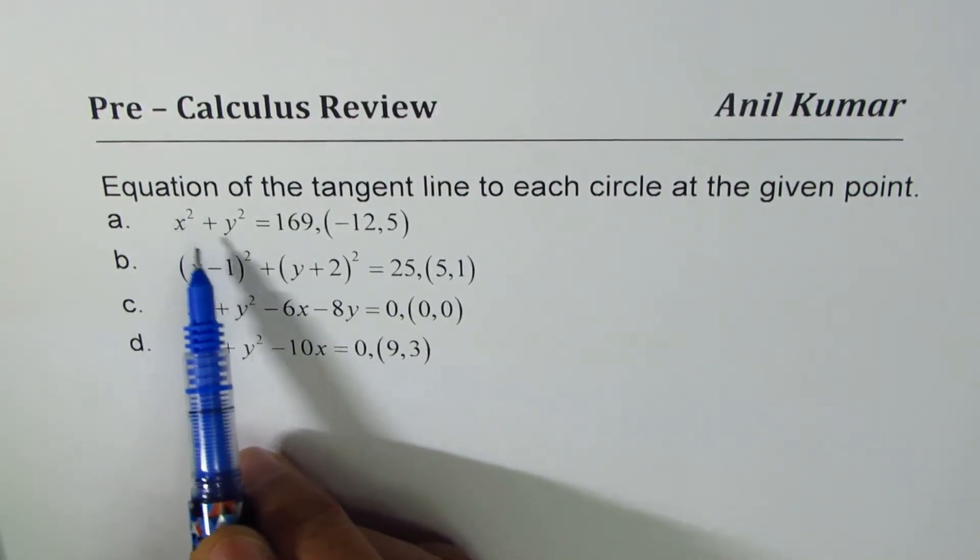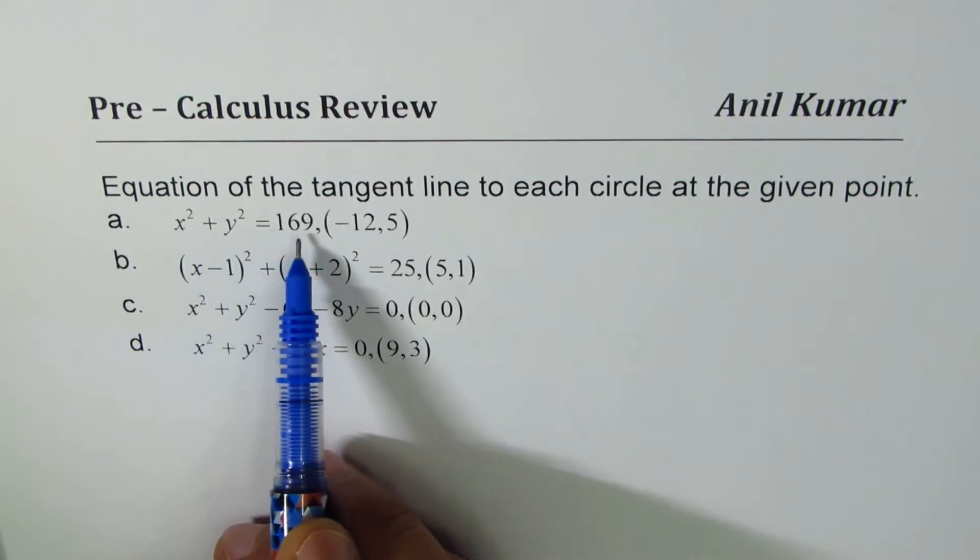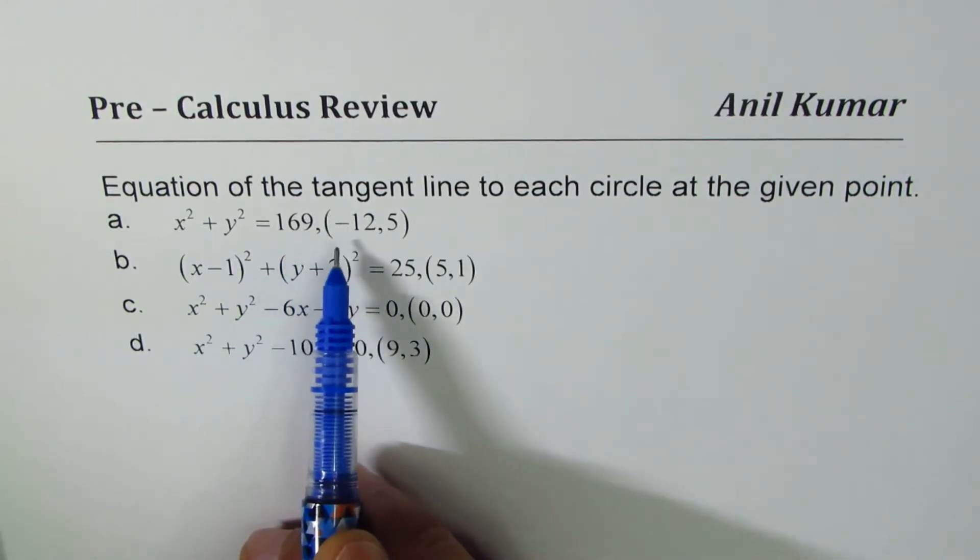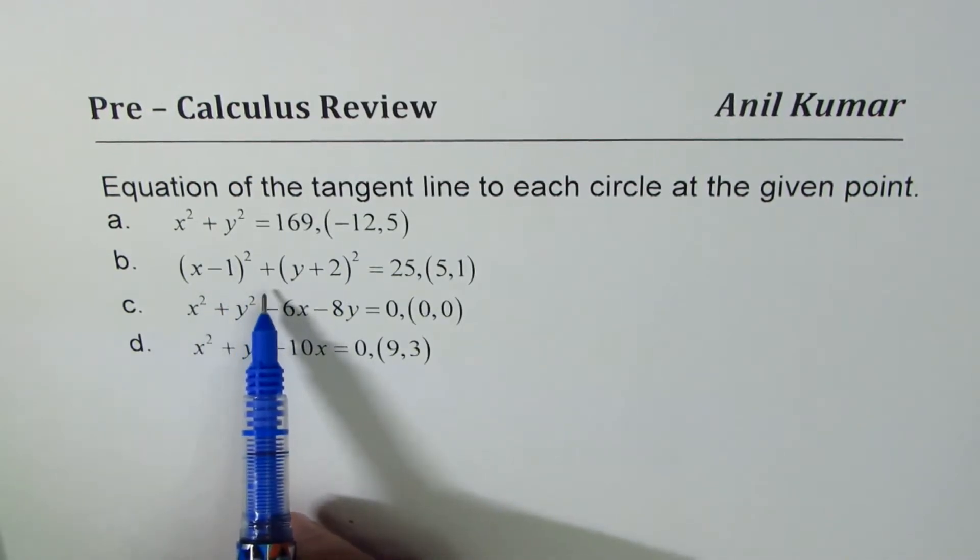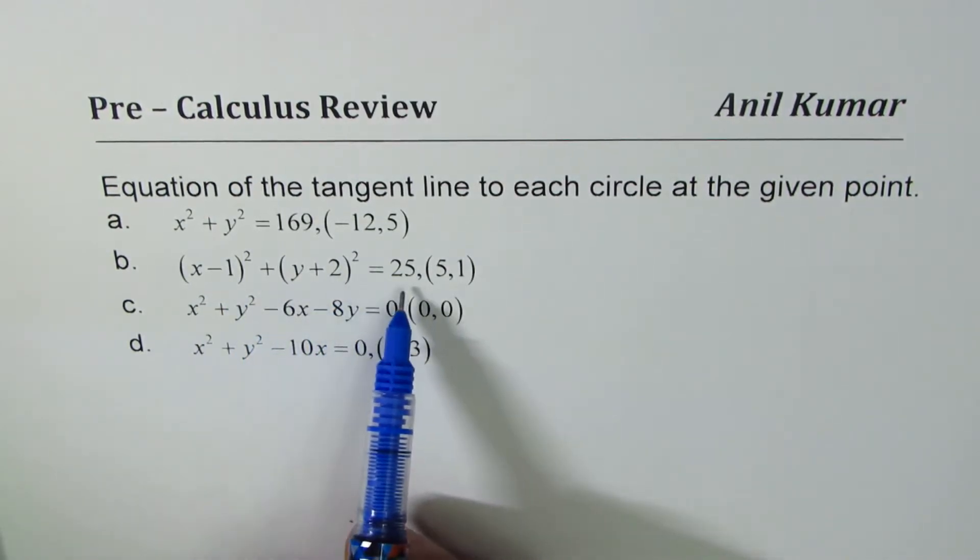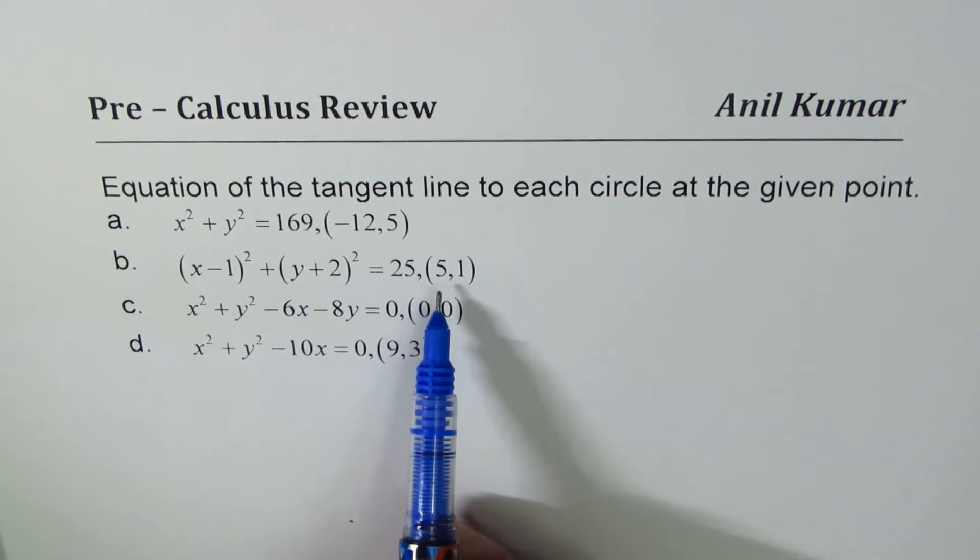The first one here is x² + y² = 169, and the point is (-12, 5). The second one is (x-1)² + (y+2)² = 25, and the point is (5, 1).